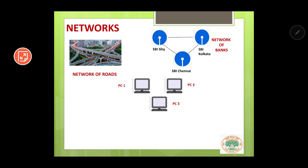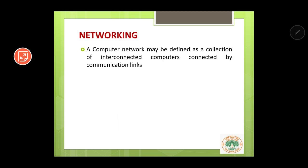For a network to be formed, there must be some kind of link between these computers. So if a link is established, we say it to be a network of computers, which brings us to the definition of computer networking. A computer network may be defined as a collection of interconnected computers that are connected by a communication link.